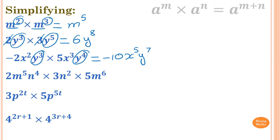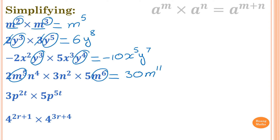Next one: with numbers, 2 times 3 is 6, 6 times 5 is 30. Then deal with m: m to the power of 5 times m to the power of 6 — we add the powers, so m to the power of 5 plus 6 is 11. And then for n squared and n to the power of 4: 4 plus 2 gives 6, so n to the power of 6. The answer is 30m¹¹n⁶.